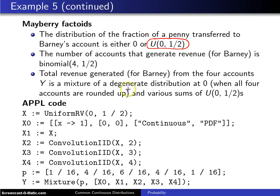Then X zero is going to be that degenerate distribution at zero. All of the mass for this distribution is concentrated at zero.